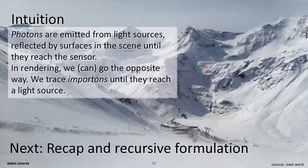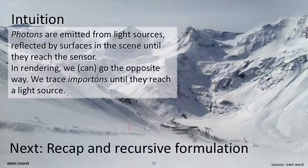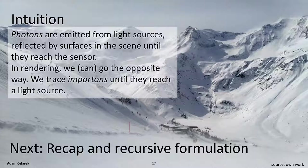To recap: photons are emitted from light sources, reflected by surfaces in the scene until they reach a sensor. In rendering we can go the opposite way — we can trace importance until it reaches a light source. Next we will have a recap of what we already saw in the light lecture, and after that we will go straight to the recursive formulation.